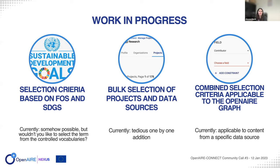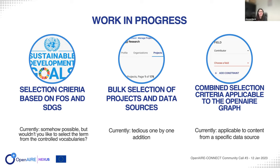The second feature that was requested was the possibility to select projects and data sources in bulk mode, because now you have to click each data source or each project that is included in your search, which is a little tedious. So we will allow you to do it in bulk — you do a search by a term, for example on the project, you get a list of projects and you can select them all. And then clearly, if there are some false positives in this list which are not relevant for your community, you can remove them one by one, since we assume there will not be a lot of false positives if you use bulk addition.